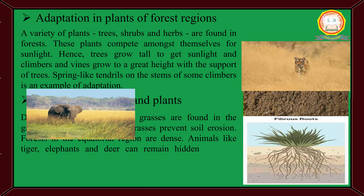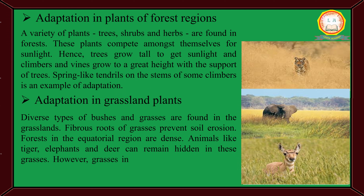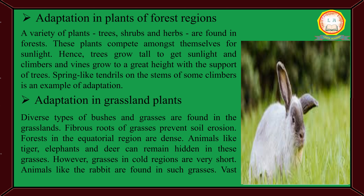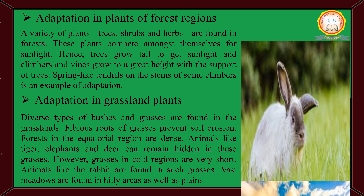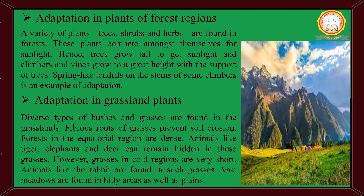Animals like tiger, elephants and deer can remain hidden in these grasses. However, grasses in cold regions are very short. Animals like rabbit are found in such grasses. Meadows are found in hilly areas as well as plains.